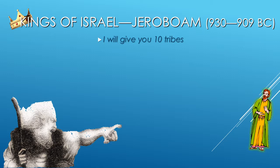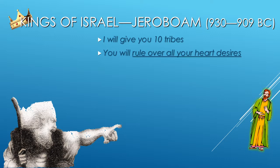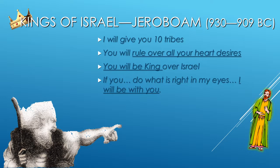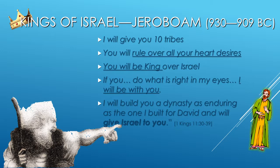'Yet to his son I will give one tribe, that David my servant may always have a lamp before me in Jerusalem, the city where I have chosen to put my name. And I will take you, and you shall reign over all that your soul desires, and you shall be king over Israel. And if you will listen to all that I command you, and will walk in my ways, and do what is right in my eyes, by keeping my statutes and my commandments as David my servant did, I will be with you, and will build you a sure house as I built for David. And I will give Israel to you, and I will afflict the offspring of David because of this, but not forever.'